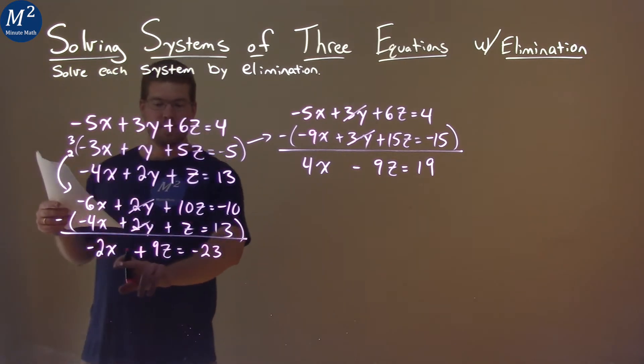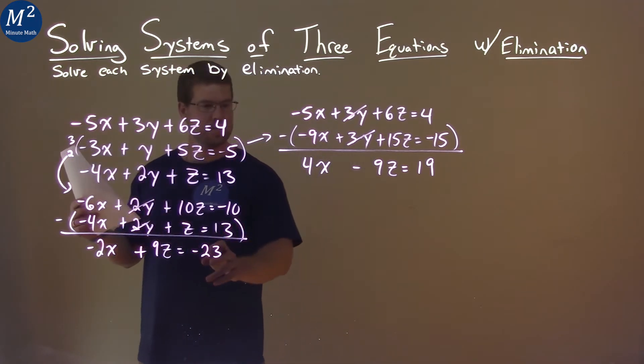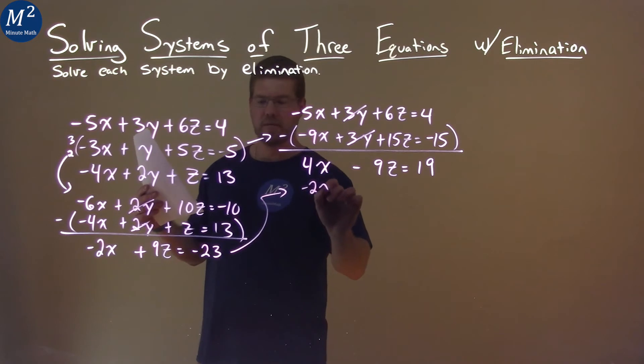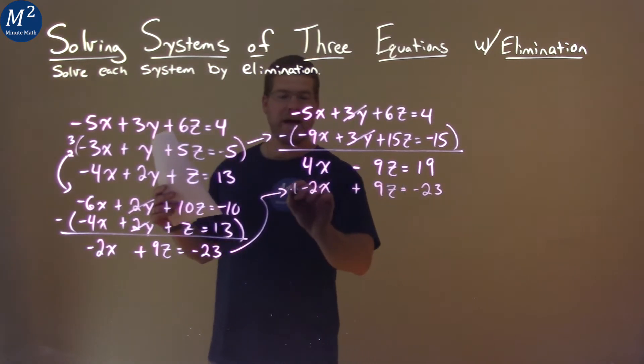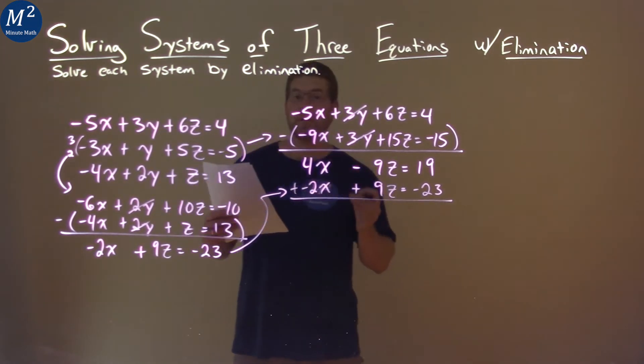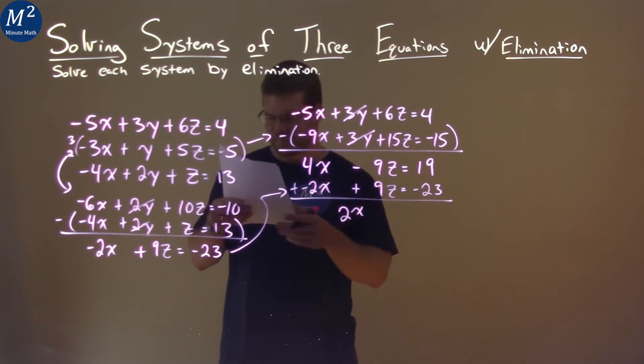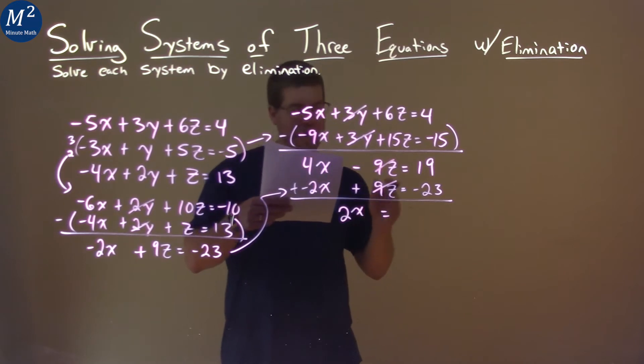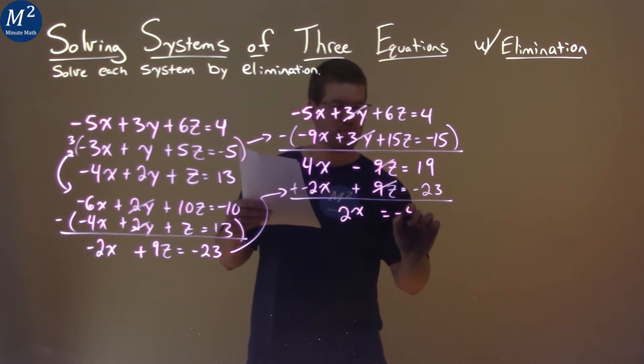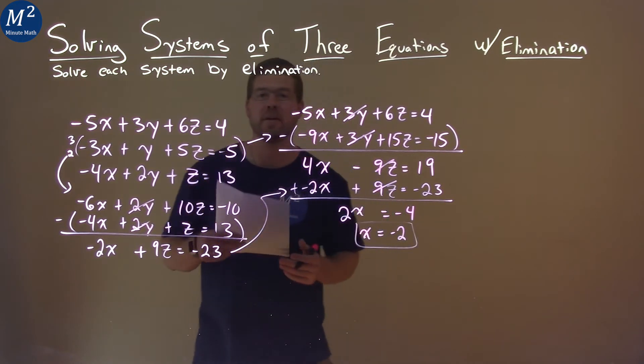So now we have this equation and this equation both have the same variables, x and z. Well, actually, watch this. I just bring this over here. Negative 2x plus 9z equals negative 23. And if I add these two equations, our 9z's will cancel, which is great for us. So 4x plus negative 2x is just 2x here. Negative 9z plus 9z eliminates, we get 0. And then 19 plus negative 23 is negative 4. Divide both sides by 2, and x equals negative 2. And that's our first value we found.